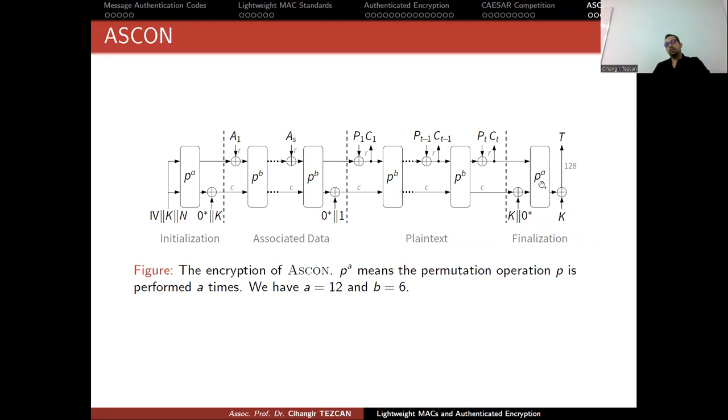At the end you perform the permutation again. But this time from the bottom two rows, you XOR it with your secret key and provide the tag. So at a single pass you are taking the associated data, providing ciphertext, and providing tag.